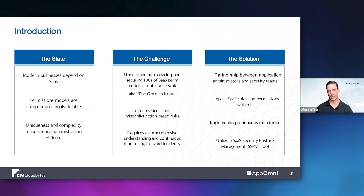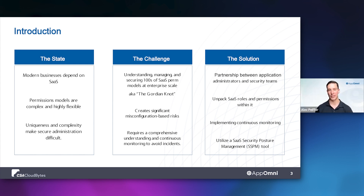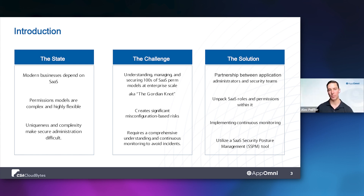If you were starting from a green field and deploying an application for the first time, maybe it's a bit simpler — still difficult, but doable. But the problem is you're inheriting these applications, some being used for over a decade. The challenges you're facing have been tied into all sorts of knots. There's scar tissue within the organization's permissioning models. It's very difficult to actually understand what's going on, and all this creates a massive misconfiguration-based risk that enterprises face today. We see that time and again in various breaches and incidents that tie their root back to misconfiguration.